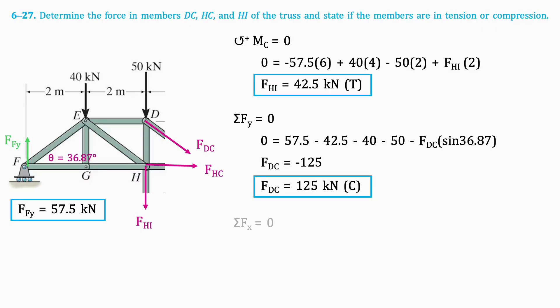Finally, we'll take the sum of horizontal forces. This is the resulting equation, which when isolated for FHC results in 100 kN in tension.